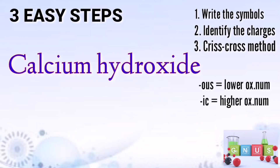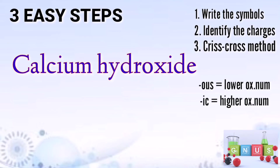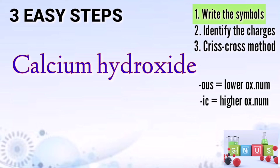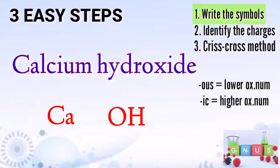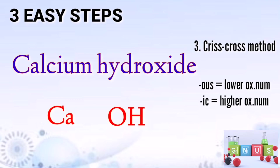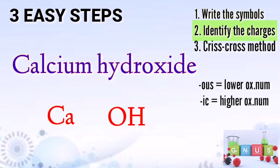Let's have an example. We have calcium hydroxide. For the first step, write the symbols of the elements or compound. The symbol for calcium is Ca, and hydroxide is OH. Then let's proceed with the second step: identify the charges of the elements or compound. Calcium is positive 2, and hydroxide is always negative 1.